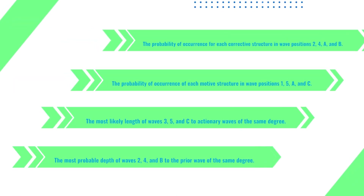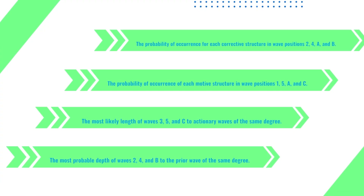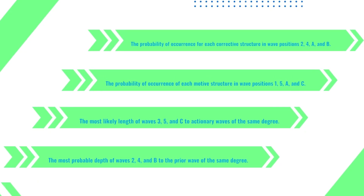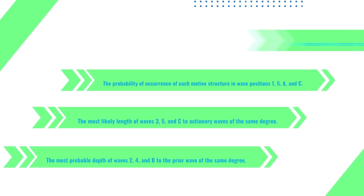Other core assumptions we were looking to test included the probability of each corrective structure, the probability of each motive structure, the most likely length of waves 3, 5, and C relative to previous waves so we could predict future price movements, and the most likely depth of corrections in waves 2, 4, and B relative to prior waves of the same degree — essentially how deep a correction is likely to go in that counter-trend movement.